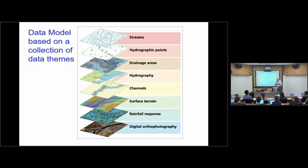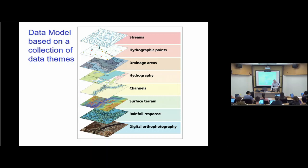The blue stuff, which was water, was kept separate. The green stuff, which is forest, is separate. The brown stuff for roads is another layer, and black for topography is different. They were all printed in different layers. So this idea of themes really came out of this concept of separating layers of information when maps were printed — but it's a fundamental idea of GIS.